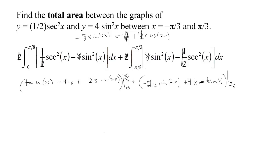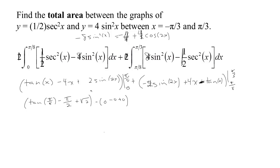Evaluating the first antiderivative: at x = π/8, we get tan(π/8) − 4(π/8) + 2sin(π/4) = tan(π/8) − π/2 + 2·(√2/2) = tan(π/8) − π/2 + √2. At x = 0, everything is 0 — sin(0) = 0, tan(0) = 0, −4·0 = 0. So the first piece is tan(π/8) − π/2 + √2.